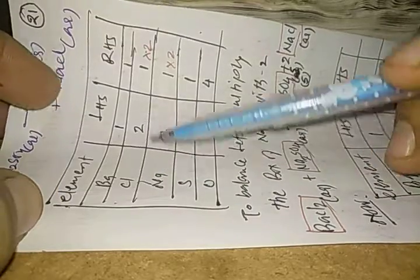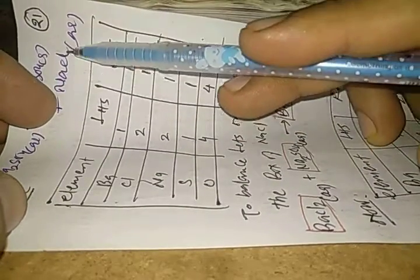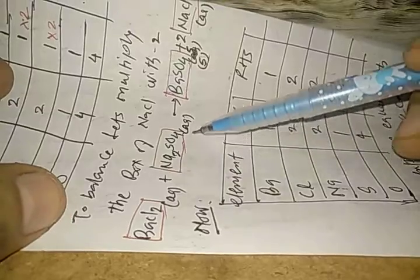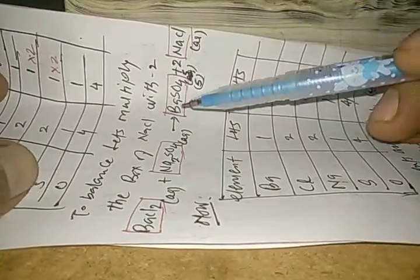So we just need to balance this chlorine and sodium, and we already have NaCl on the right hand side, so first we multiply it by 2. Finally we get this equation: BaCl2 aqueous plus Na2SO4 aqueous gives BaSO4 solid plus 2 NaCl aqueous.